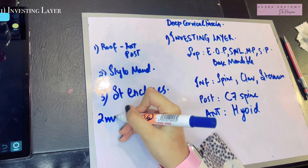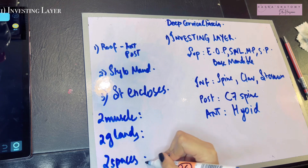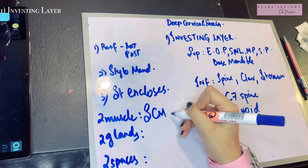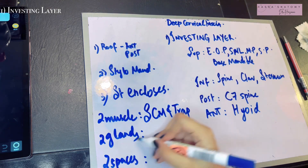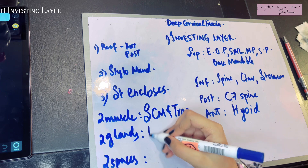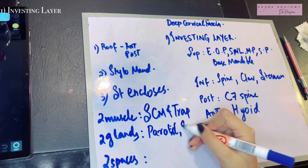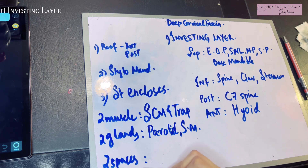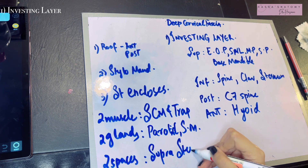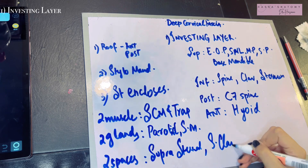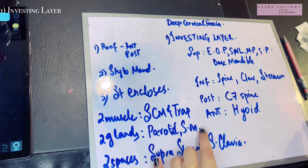It encloses two muscles, two glands, and two spaces. The two muscles are the sternocleidomastoid and the trapezius. The two glands are the parotid gland on the face and the submandibular gland lying beneath the mandible. The two spaces that it encloses are the suprasternal space and the supraclavicular space.